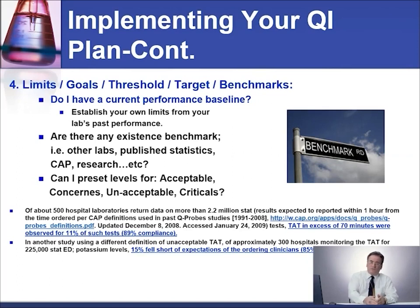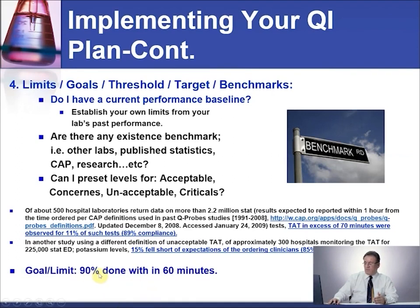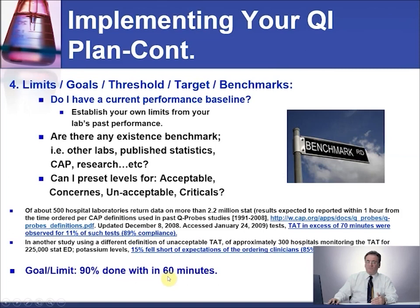So your goal should be — for example — 90% done within 60 minutes. You need a percentage and you need a time. Once you reach the limit of what you can do with the percentage, you can lower your time. So if you reach 97% within 60 minutes and you cannot improve further, maybe you can make it 97% within 50 minutes or within 45 minutes.